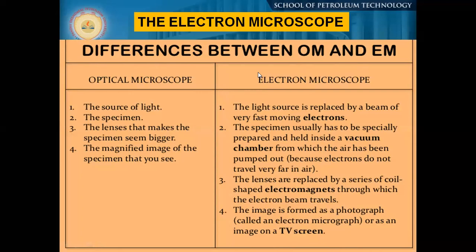In the case of the normal microscope, we have the light source only, whereas in the electron microscope, it is a beam of electrons — a beam of very fast-moving electrons. The specimens have to be specifically prepared and held inside a vacuum chamber from which the air has been pumped out. The lenses are replaced by a series of coil-shaped electromagnets through which the electron beam travels, and we try to converge the beam so that we have a specific probe current, which is not present in the normal optical microscope.